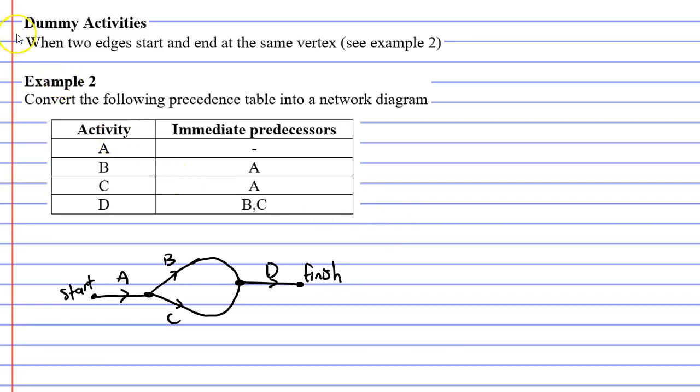So some of you might be wondering, why would I need a dummy activity in this situation? Well, we can see that our two edges that start and end at the same vertex are edges B and C. They both start at this vertex we can see here, and they both end at the same vertex as well. So why is this a problem?